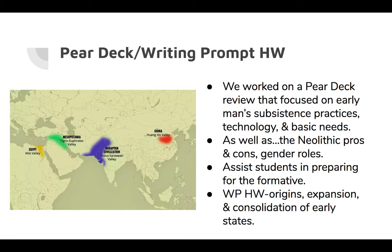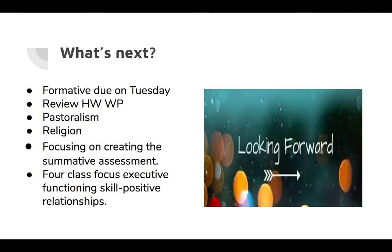The writing prompt homework is focusing on the origins, expansion, and consolidation of early states — those early river valley states, which you can see on the map here — including Egypt, Mesopotamia, Harappa, and China.